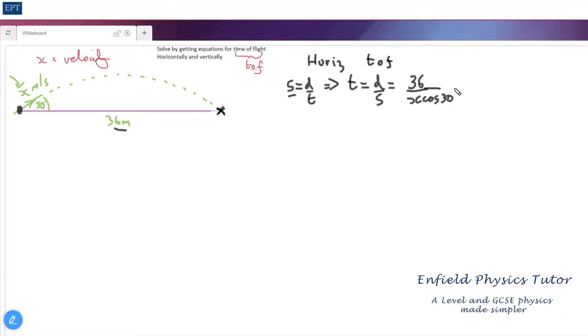So there's our first expression for t. Now let's look and see if we can get the vertical time of flight. What I would suggest we do with that is work out the time it takes to get to the top and then at the end we'll double that and that will be the time of flight.